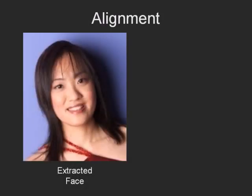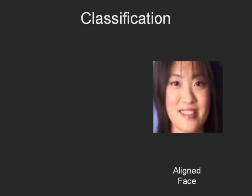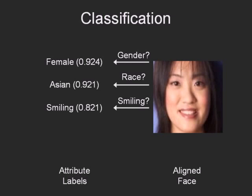Using the locations of six detected feature points, each face is then aligned to a common coordinate system. Finally, the faces are run through several attribute classifiers, which assign labels and confidences to each face. These are stored in a database for fast lookups.